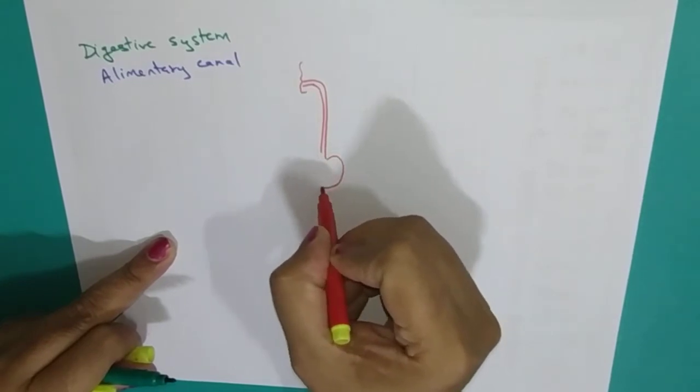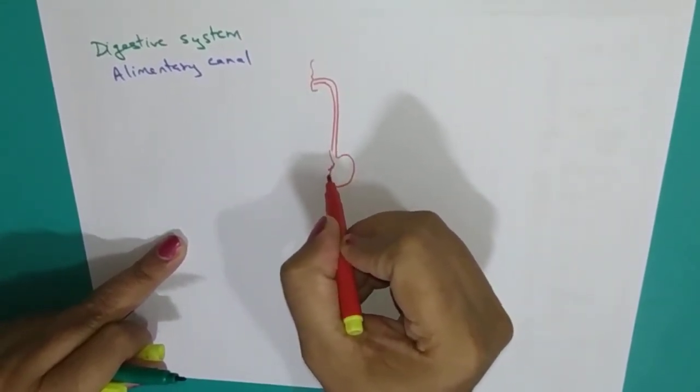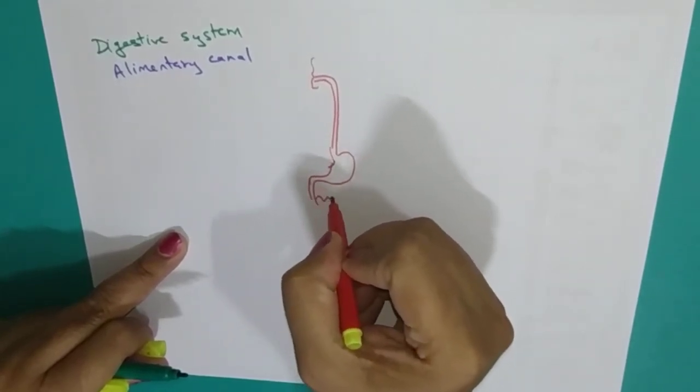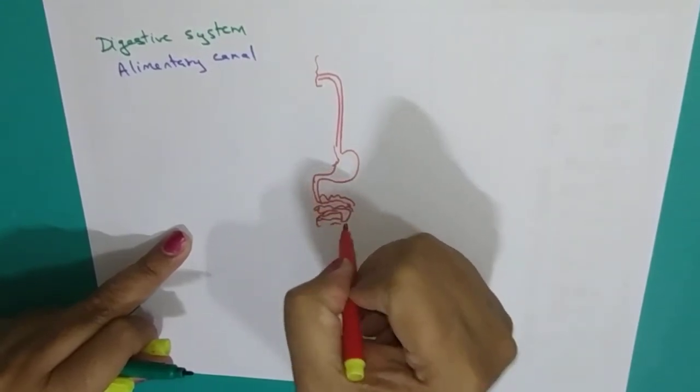Then, there is a J-shaped structure called as stomach. After the stomach, you will find highly coiled surface and this coiled part is the small intestine.